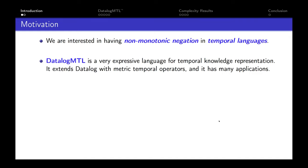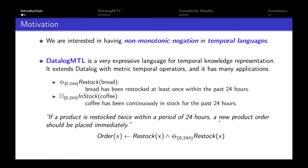Metric Temporal Datalog is a very expressive language for temporal knowledge representation. Essentially, it extends Datalog with operators from metric temporal logic. For example, a retailer may want to express that in a supermarket, bread has been restocked at least once within the past 24 hours. This can be done with the fact restock(bread) and a past diamond operator saying that this fact holds at least once within this interval in the past.